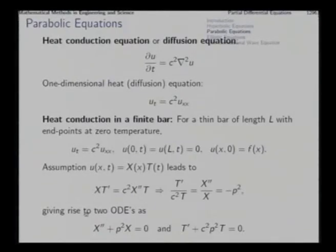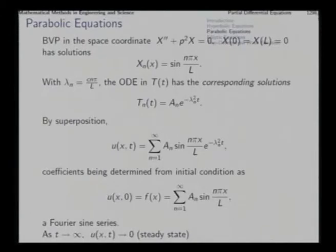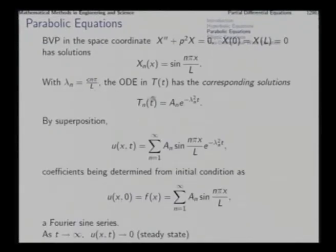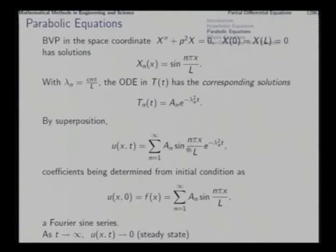The solution of the second-order ODE, constructed as in the last problem, gives X sub n for all values of n equal to 1, 2, 3 and so on. The corresponding value of p is n pi by L. The first-order ODE for T gives an exponential solution with lambda n equal to c times p. Every product of X and T for every value of n is a solution, and their linear combination through superposition is also a solution, satisfying the boundary conditions and the differential equation.